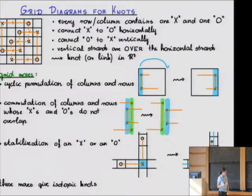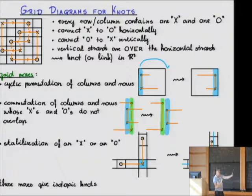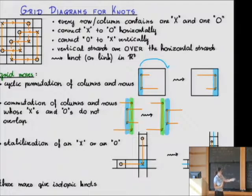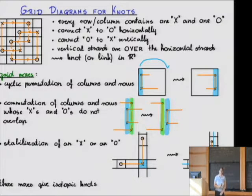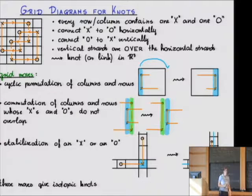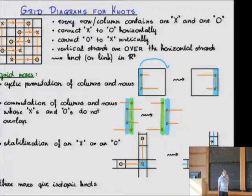You can check by a little bit of case analysis that these operations don't change the knot. The cyclic permutation doesn't change the knot because everything you move is entirely over the knot. The commutation move is in the worst case a Reidemeister II move, and the stabilization could introduce an extra kink — a Reidemeister I move — or just an isotopy. An audience member asks why you use two different kinds of marks.